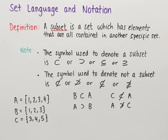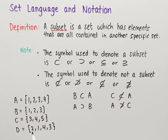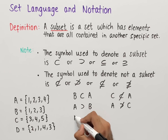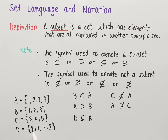Now let's say we have set D, which contains the elements 2, 1, 4, and 3. Every element of D is in A, and in fact both sets are the same — D is just ordered differently. If ordered from smallest to largest, D and A would be identical. In this case we say D is a subset of A, but we use a line underneath the symbol to indicate that both sets are equal.